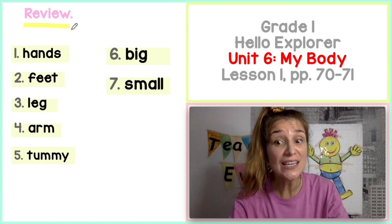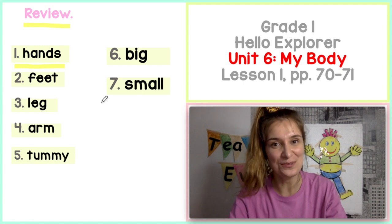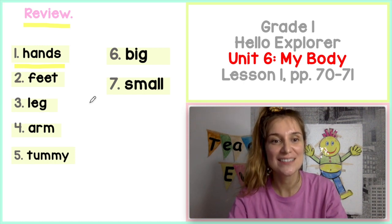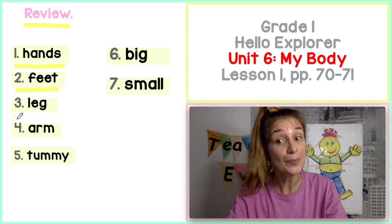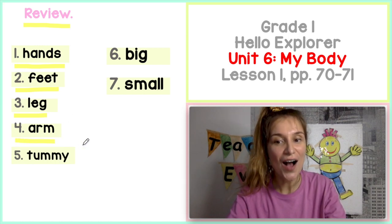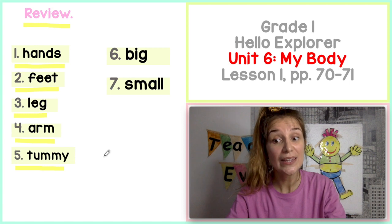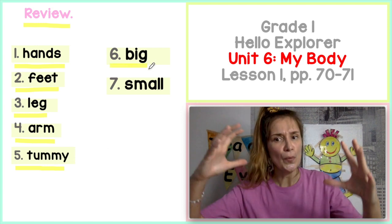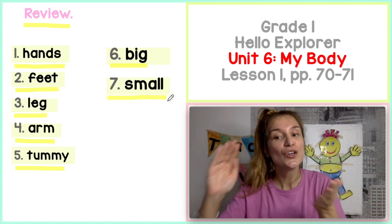Now let's review. Powtórzmy. Number one: hands. Number two: feet. Number three: leg. Number four: arm. Number five: tummy. Number six: big. Number seven: small.